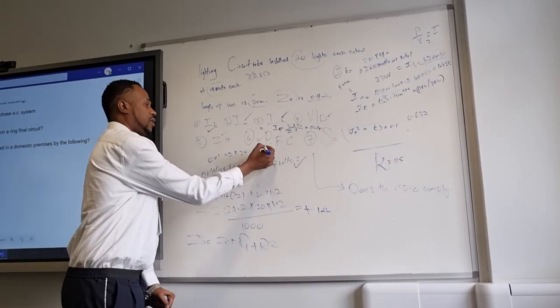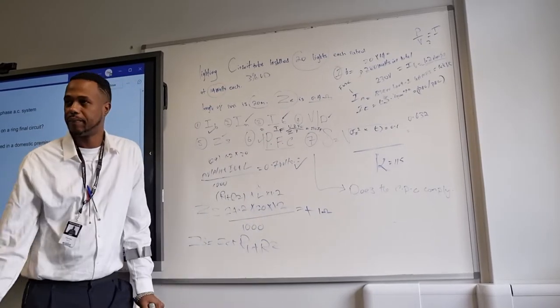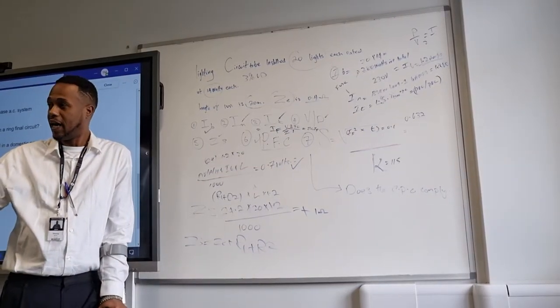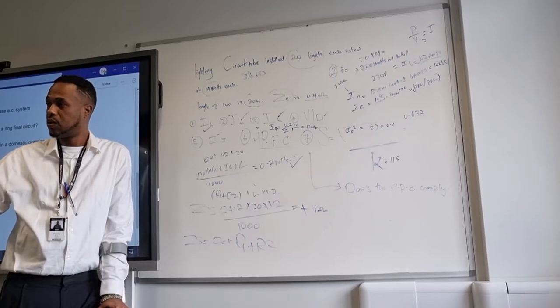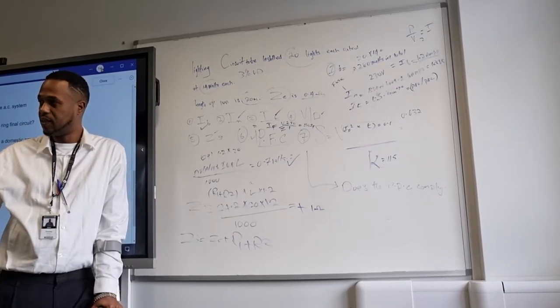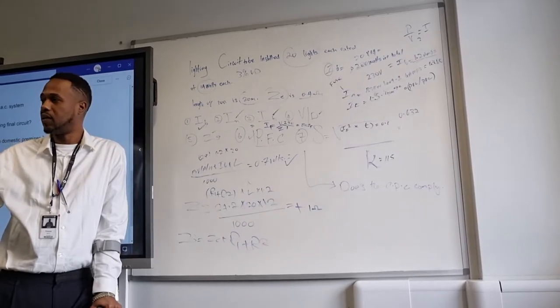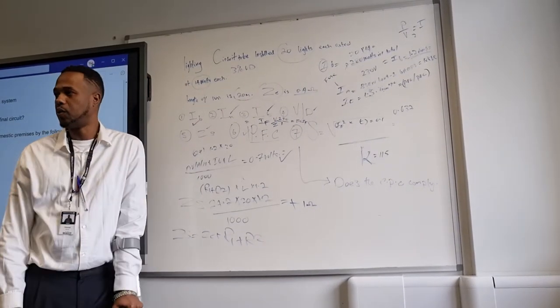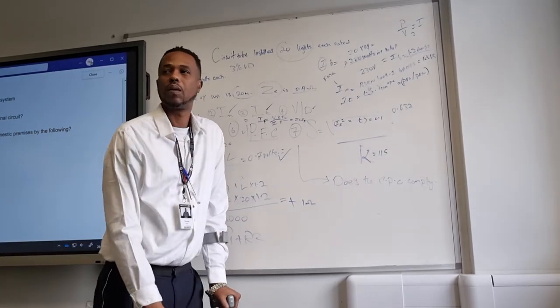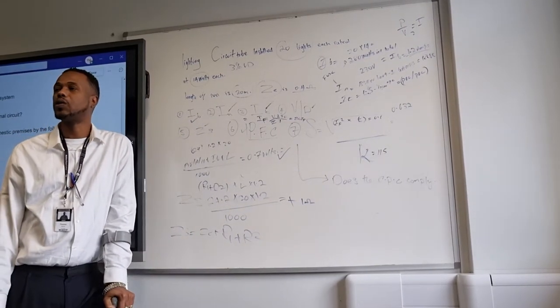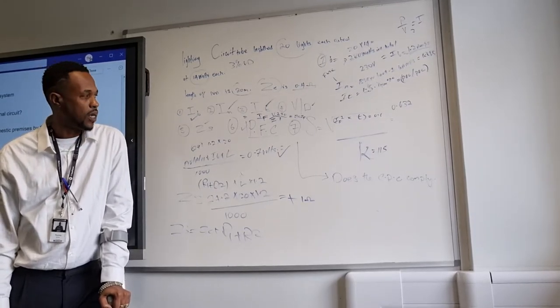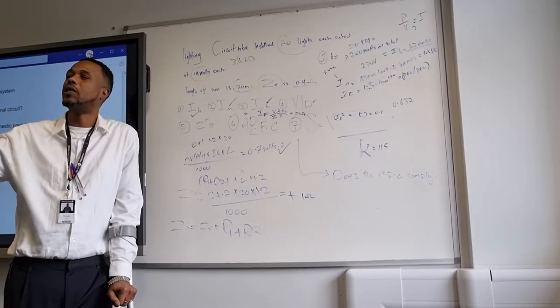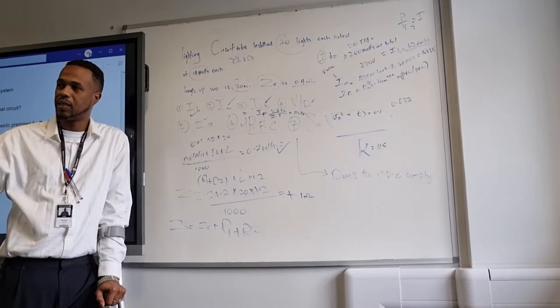The prospective fault current, which is IF, or PFC, equals volts over impedance. So you need to write IF equals volts divided by impedance. So you can have IF equal V over Z. And that gives us 230 divided by the impedance. Write the letters though. Write the formula. And whatever the scenario is, you put the numbers into that.